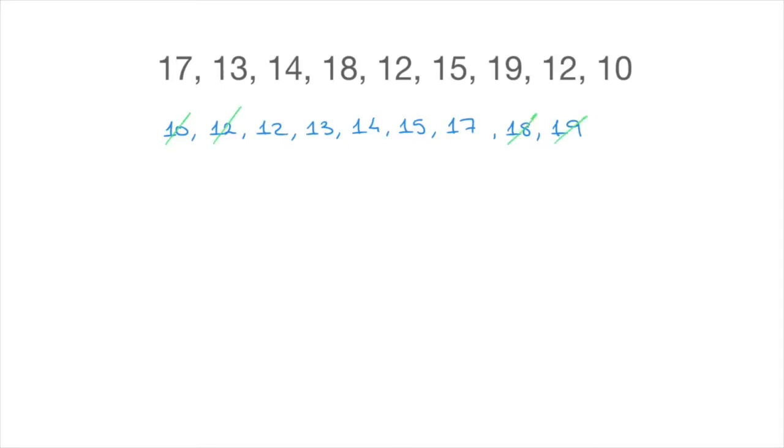We cross out the 12 and the 18, the 12 and the 17, the 13 and the 15, and we can see here that we're left with one middle value right here, which is 14. And that's the middle value. In other words, that's the median value of this set of data.